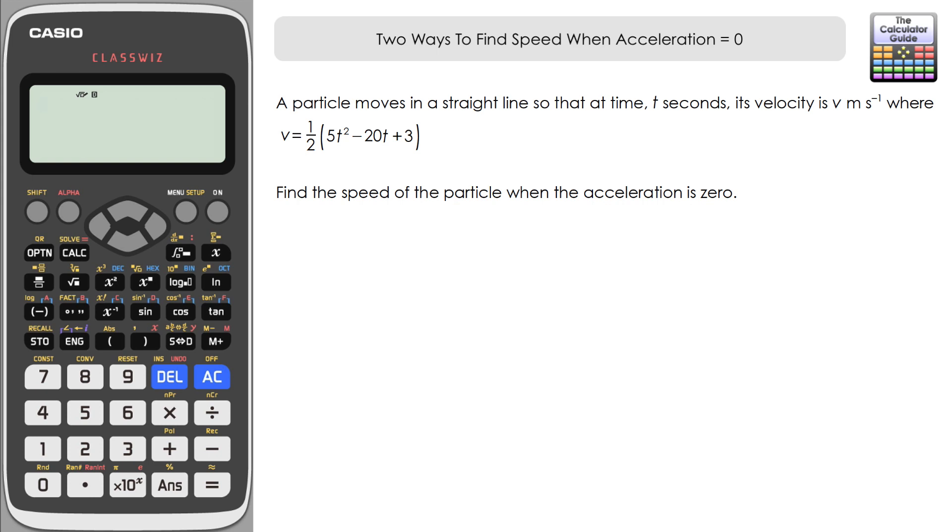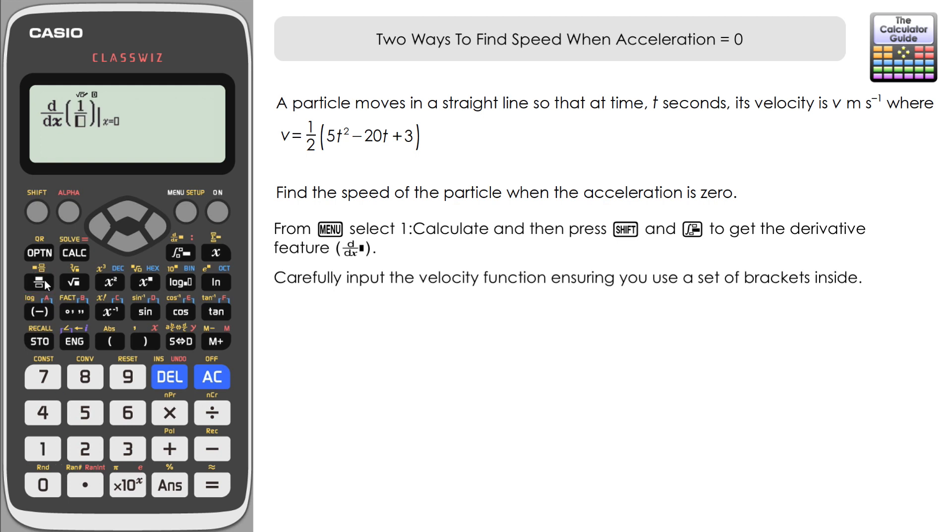Let's have a look at the first way, which is using the derivative feature and solve in the calculate mode. So we're just in calculate now. We need to activate the derivative feature, so that's shift and then this button here. You can see we've got d by dx and a set of brackets open. We have to be careful how you input this. We're going to start off with one-half, and then you want a second set of brackets.